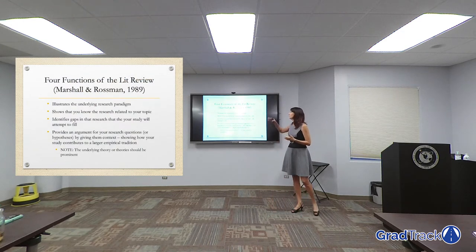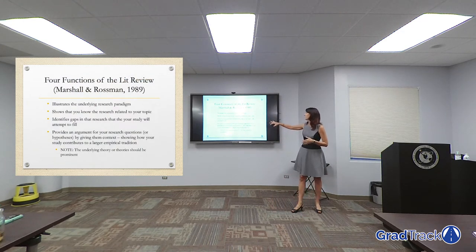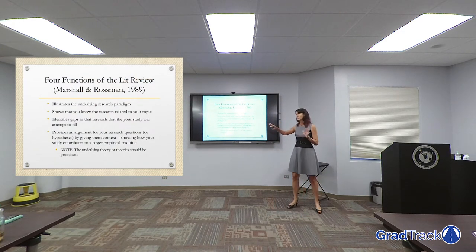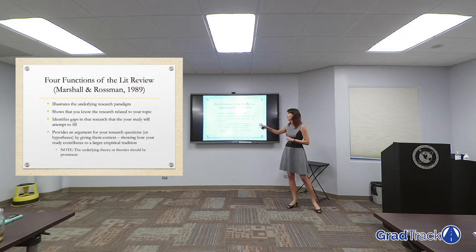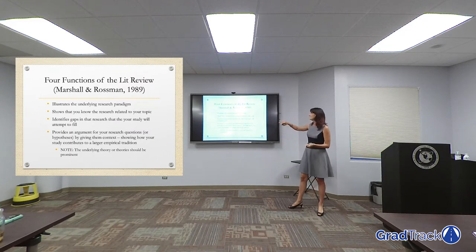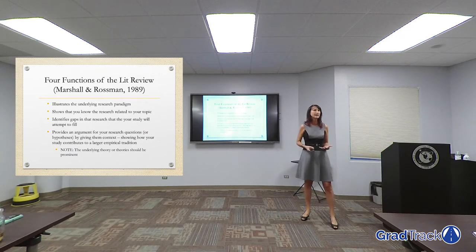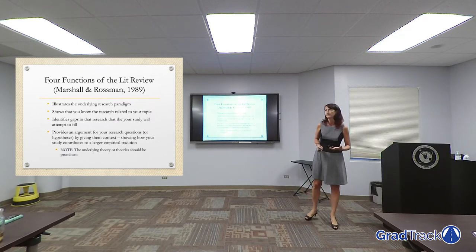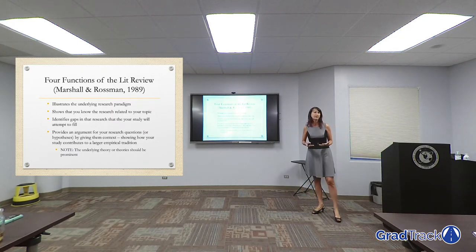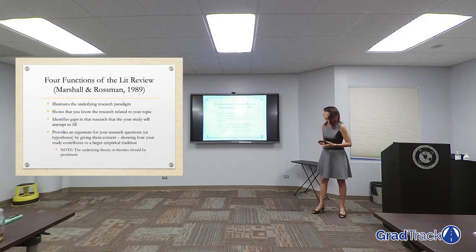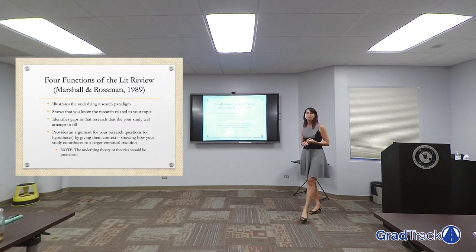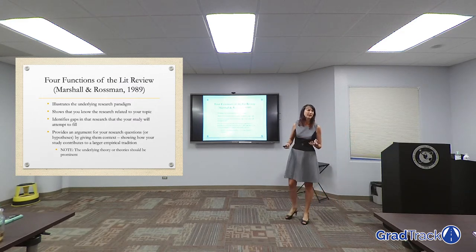Marshall and Rossman back in 1989 told us four key points as to why we write literature reviews — what is the function of that literature review. First, it illustrates the underlying research paradigm. What's a paradigm?